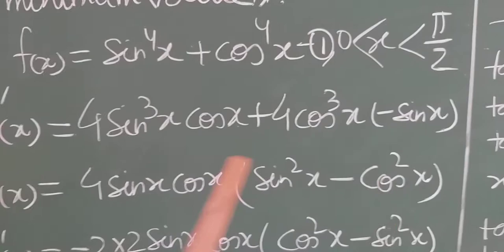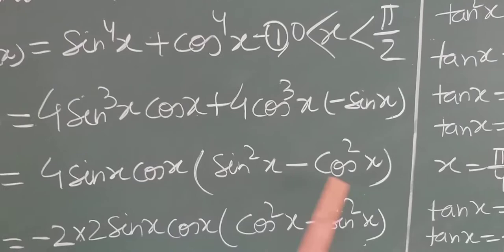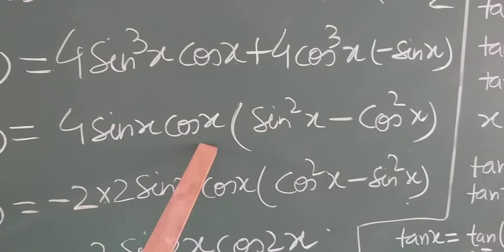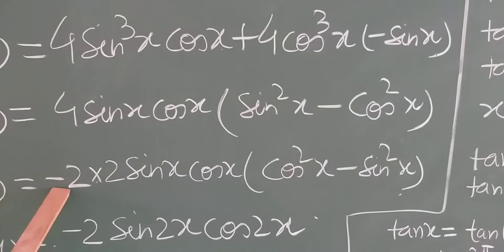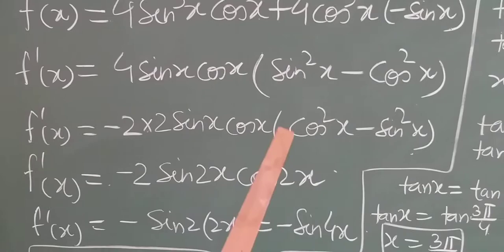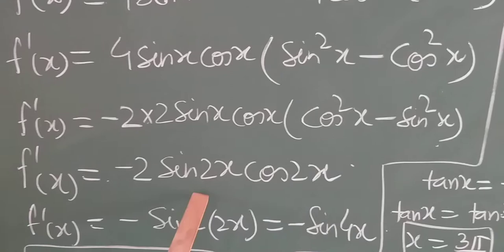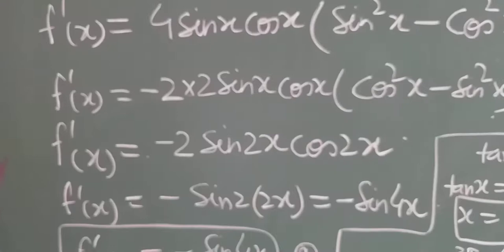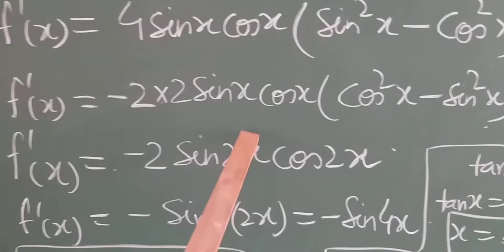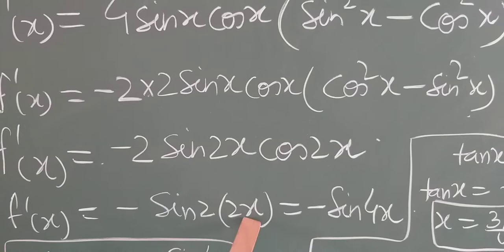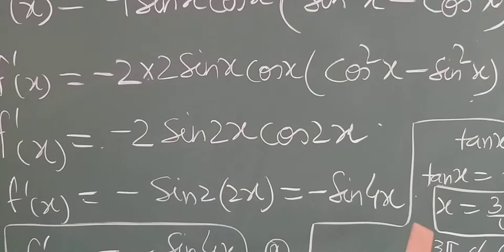Taking 4sinx·cosx common, what remains is (sin²x − cos²x). Now 4sinx·cosx can be written as 2·(2sinx·cosx), and taking minus common gives cos²x − sin²x, which equals cos2x. And 2sinx·cosx = sin2x. So we can write this as −sin(2x·2x) = −sin4x. So the first order derivative is f'(x) = −sin4x.